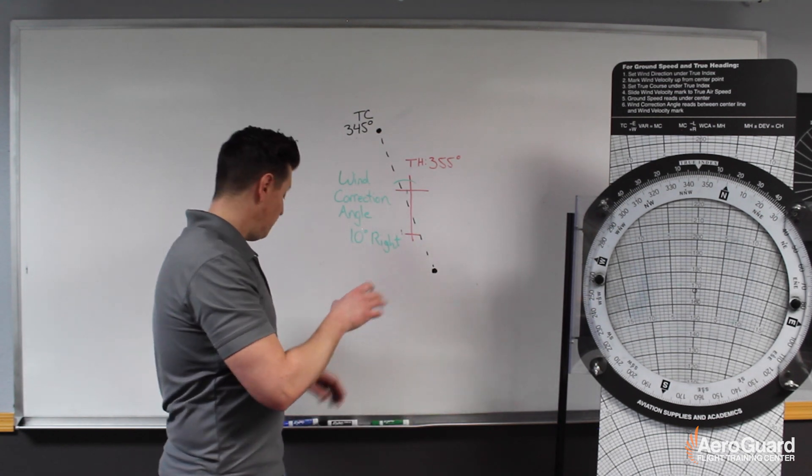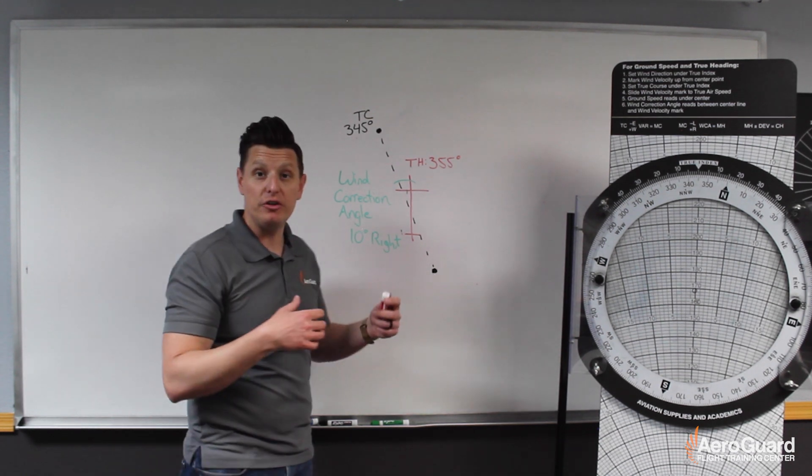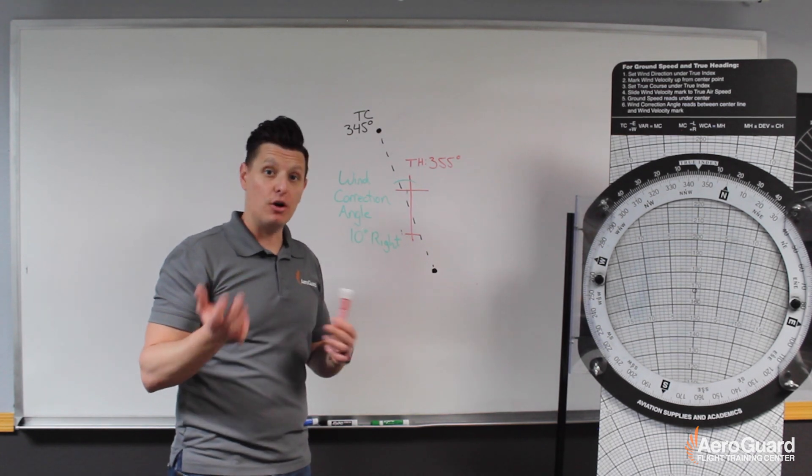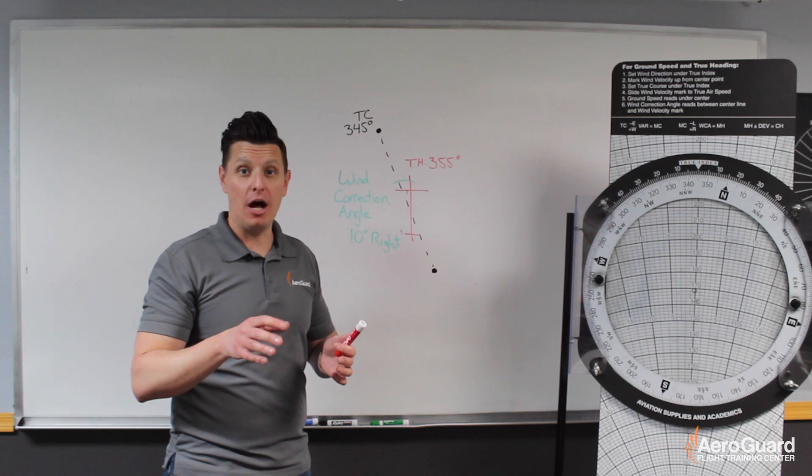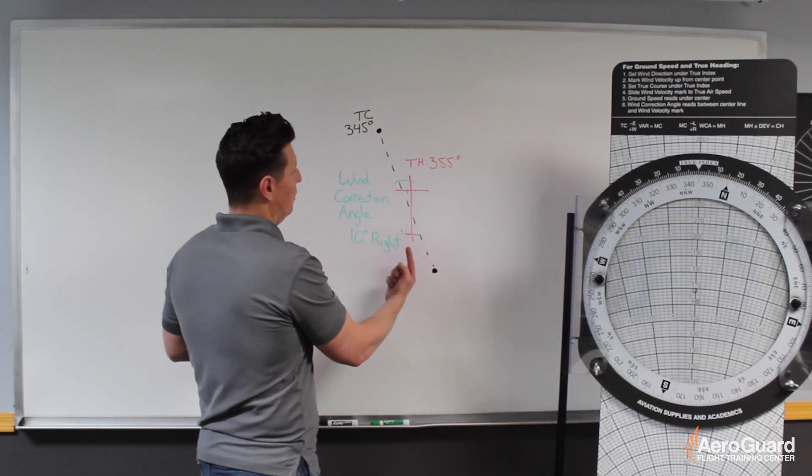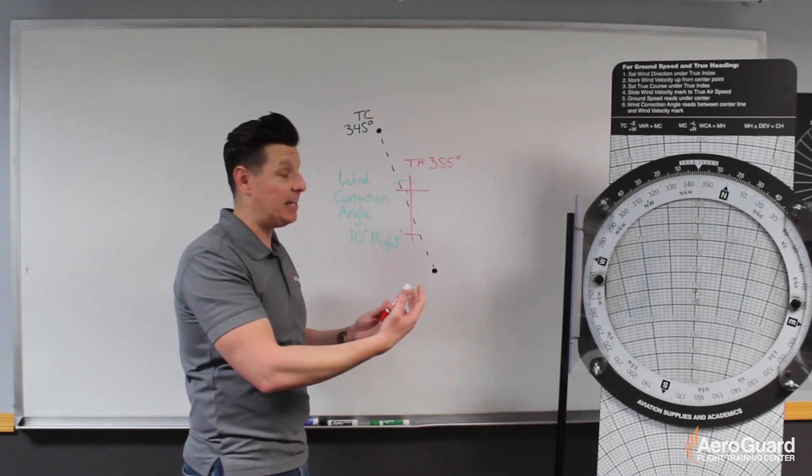We can also tell from the information they provided, our ground speed is 95 knots and our true air speed was 85, meaning our ground speed was about 10 knots faster than our true air speed. This means that there's some kind of wind that's sort of pushing us from behind that's making our ground speed faster.